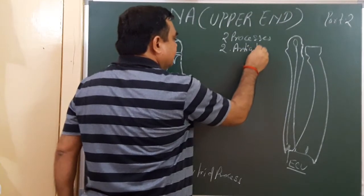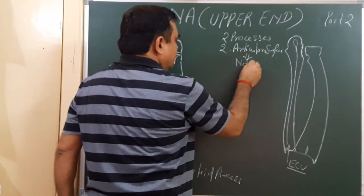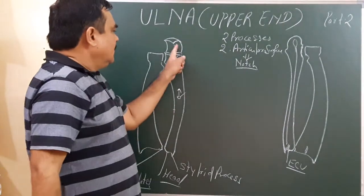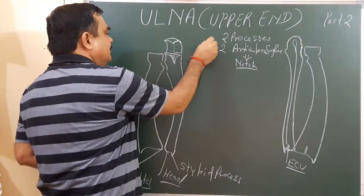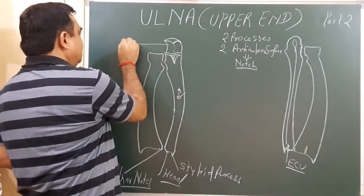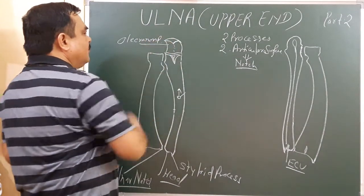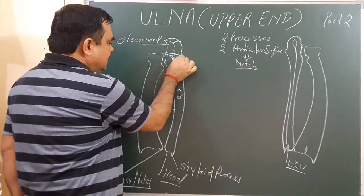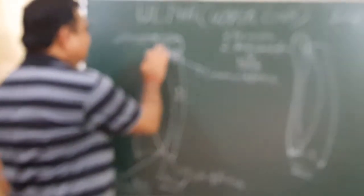The first process is the olecranon process, and the second process is the coronoid process. These are the two processes of the upper end of the ulna.